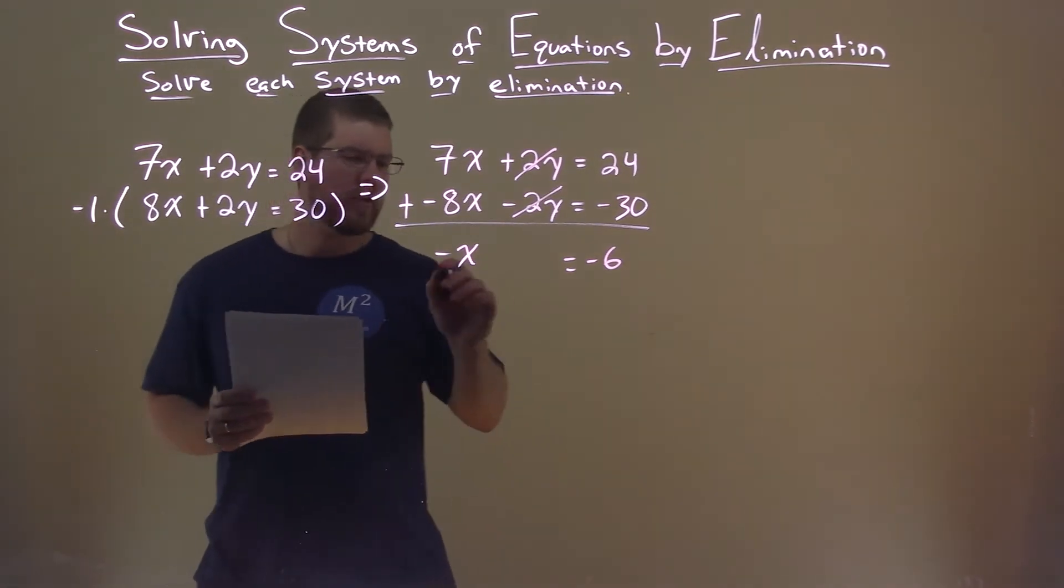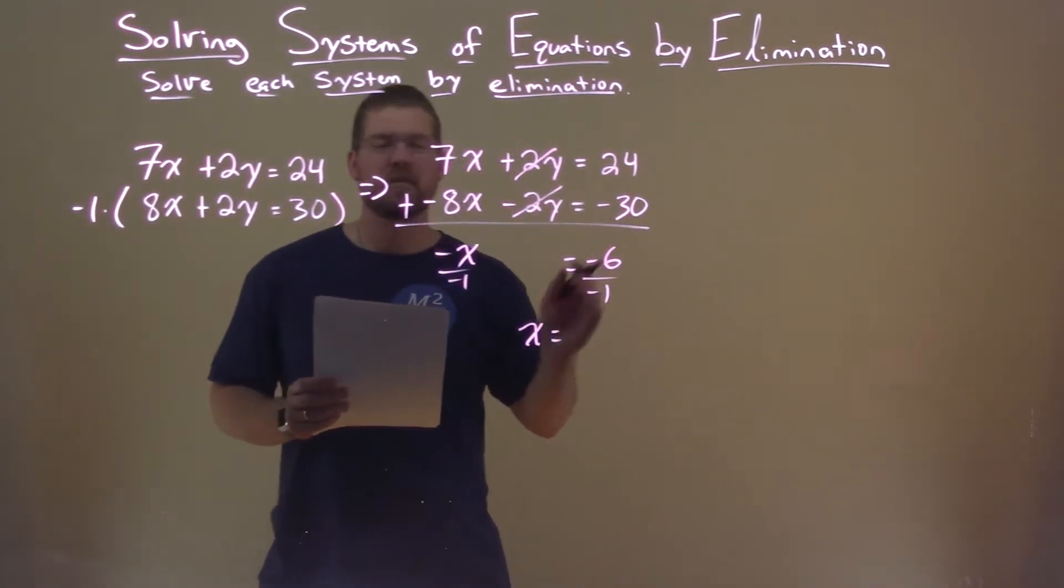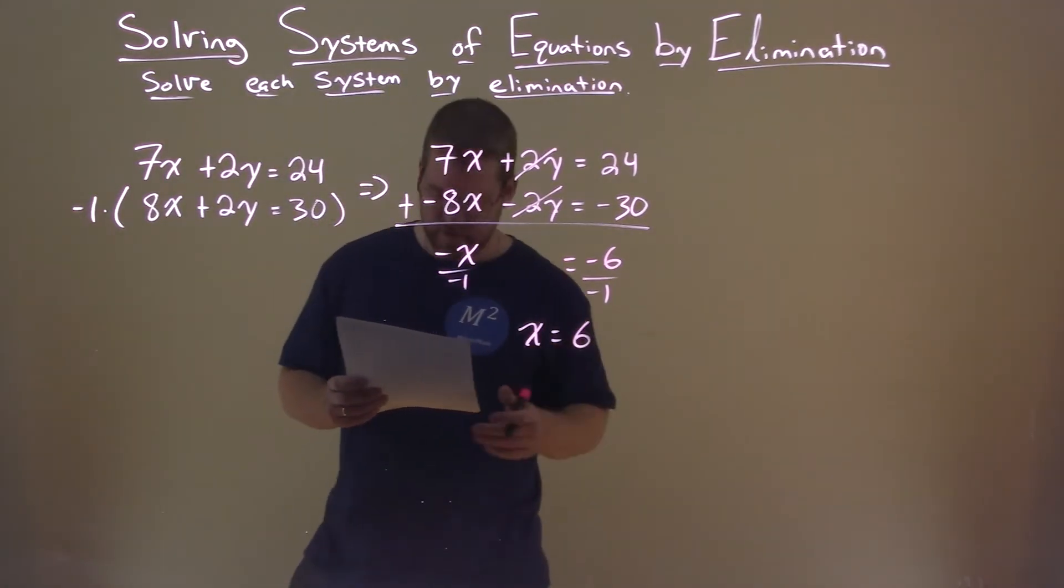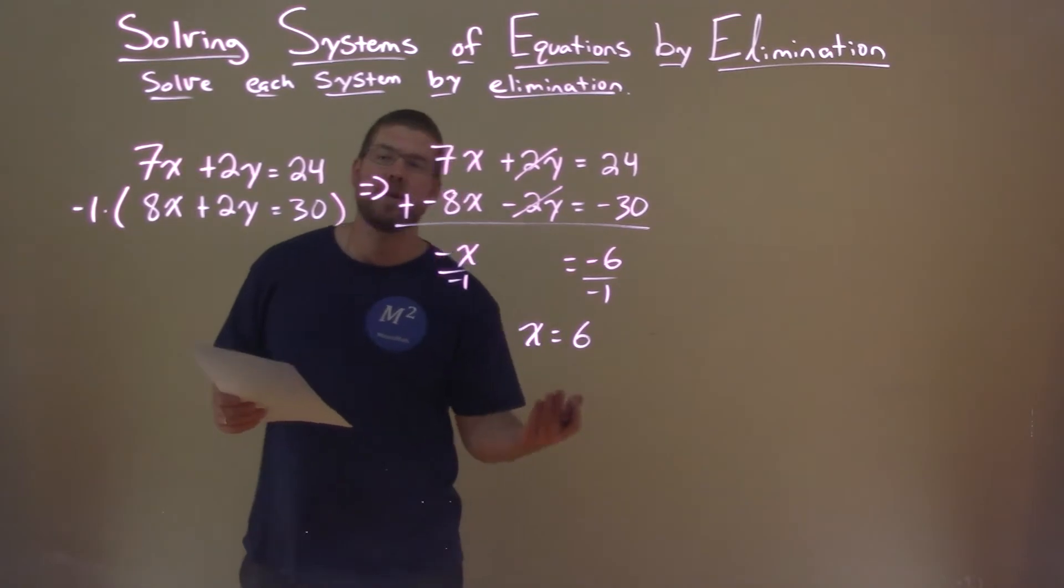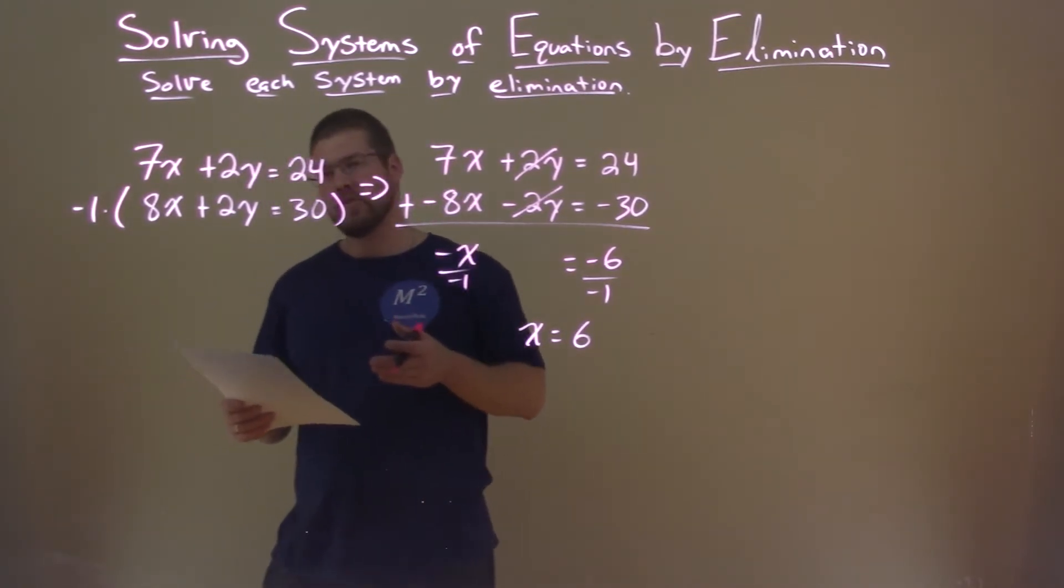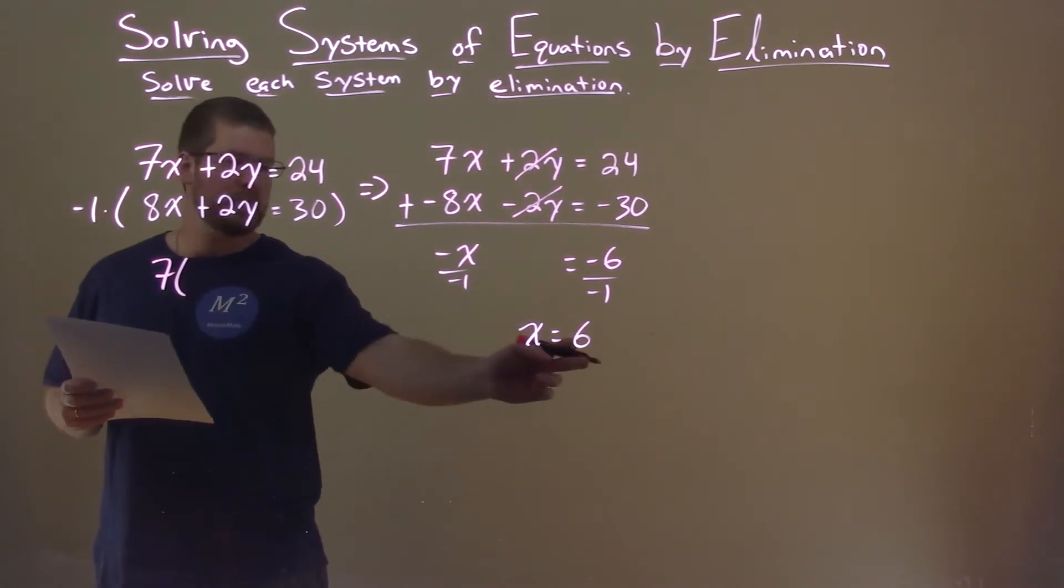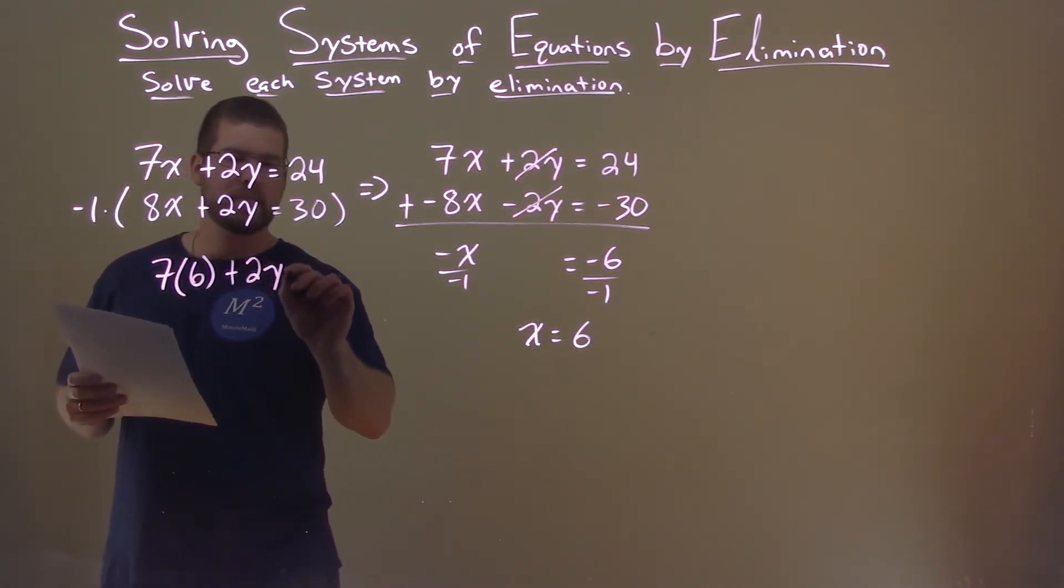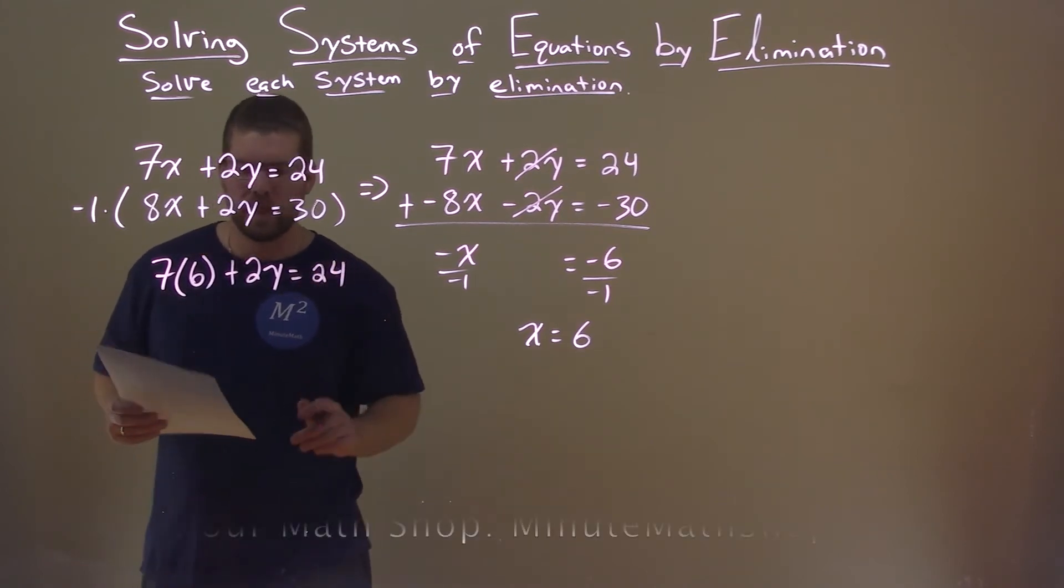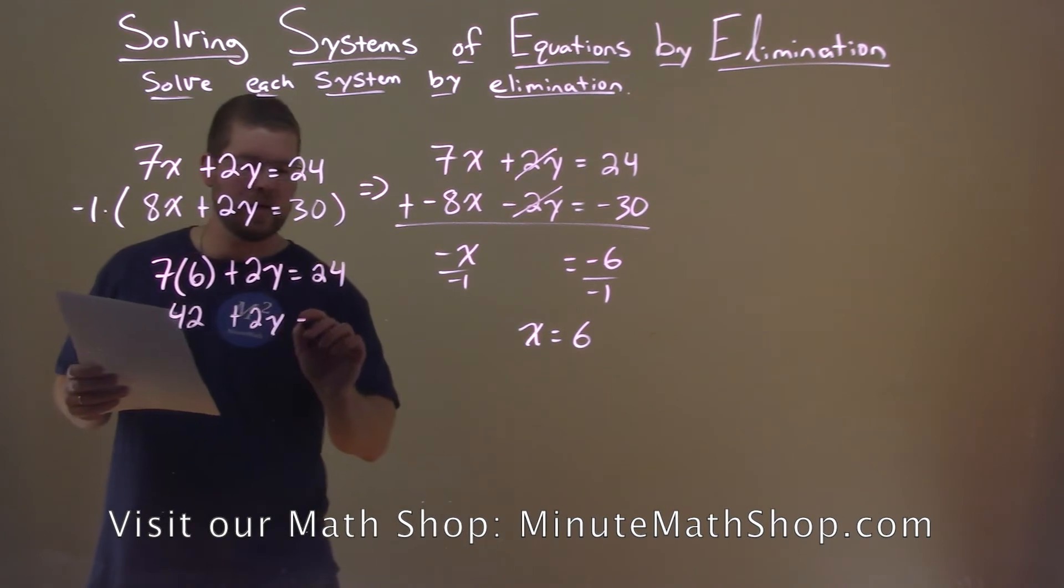Divide both sides by negative 1 to get x by itself. Negative 6 divided by negative 1 is 6. So x = 6, and we need to plug it into one of our equations to solve for y. Let's go with the top one. 7 times 6 plus 2y equals 24. 7 times 6 is 42.